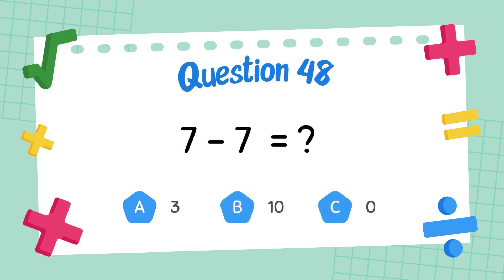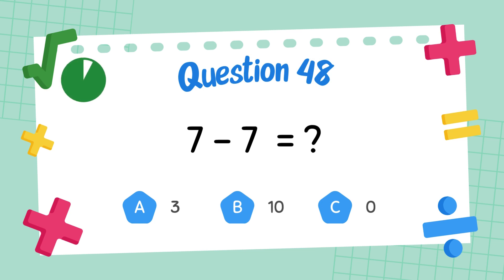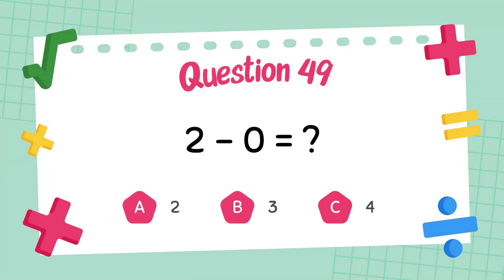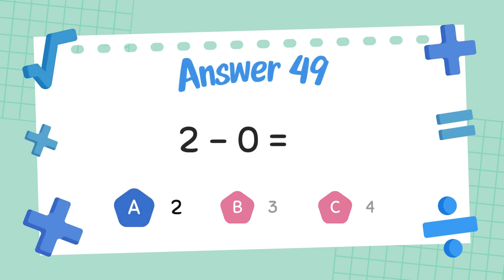What is 7 minus 7? The answer is 0. What is 2 minus 0? The answer is 2.